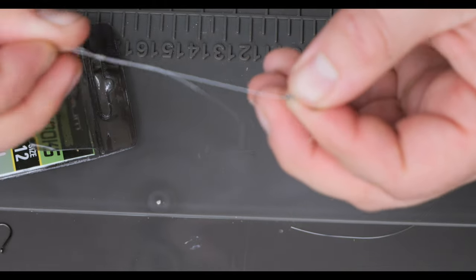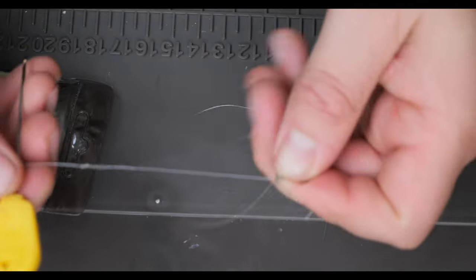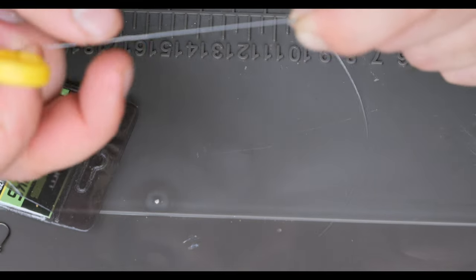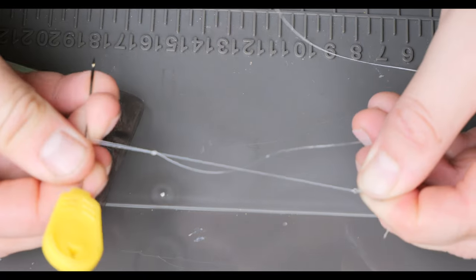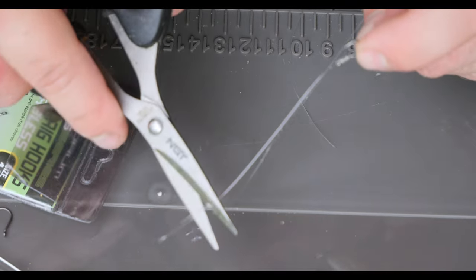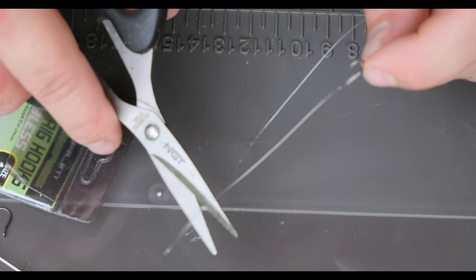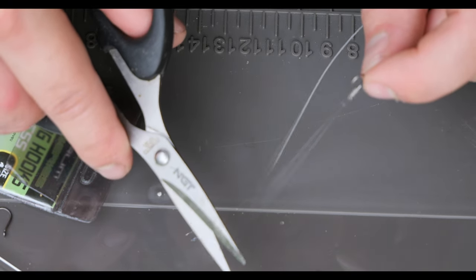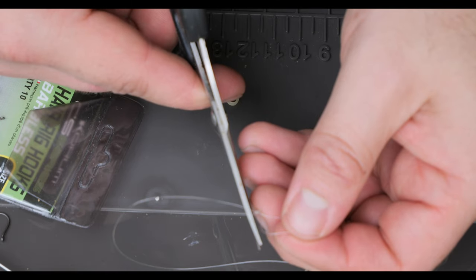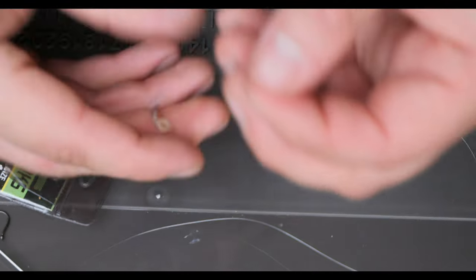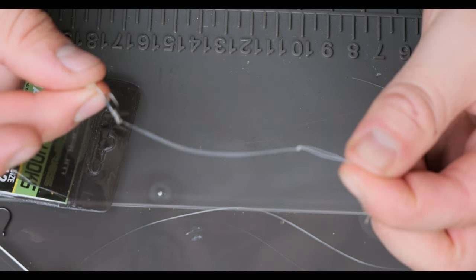So you want to pull that. It helps if you can get something that isn't going to break the line through the loop and then tighten the loop by pulling on the tag end as well. Make sure you trim the tag end and not the hook length section. I've done that before now. Fairly close to the knot, leave about half a centimeter. And there we go.